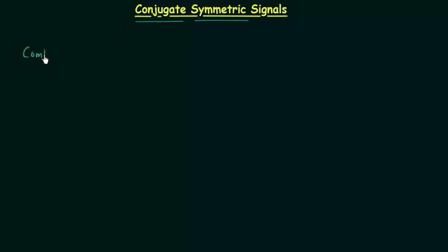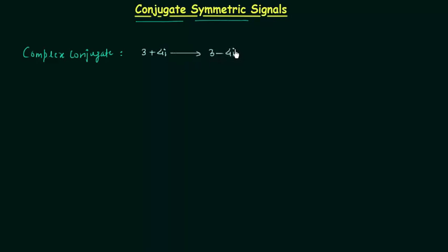We will understand what we mean by complex conjugate. Let's take one imaginary number: 3 plus 4i is the imaginary number, and the complex conjugate is equal to 3 minus 4i. Here, 3 is the real part and 4i is the imaginary part. In order to obtain the complex conjugate, you only have to change the sign of the imaginary part. Here the sign is positive so we have changed it to negative, so the complex conjugate is 3 minus 4i.